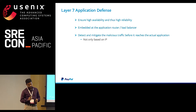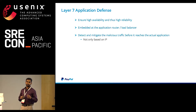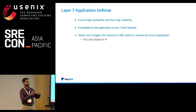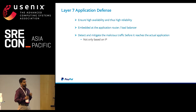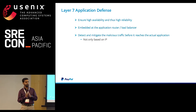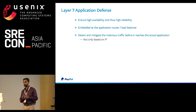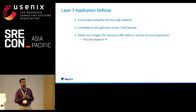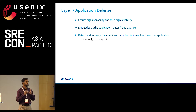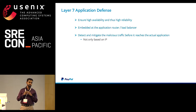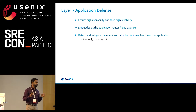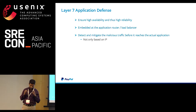The layer 7 application defense is going to help keep the bad guys away and in turn increase availability and make the site reliable. It's embedded at the application router layer. If the defense is at a higher layer like the network layer, we can only do mitigation based on IP address. But closer to the application — sitting at the router or near it — you have visibility of the entire incoming request, so you can create mitigations based on any user parameter or request parameter.